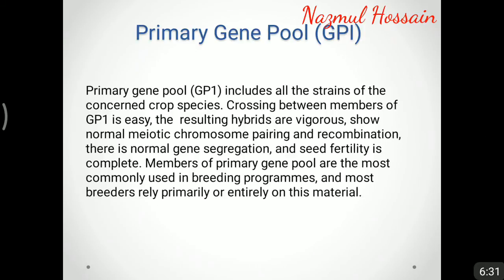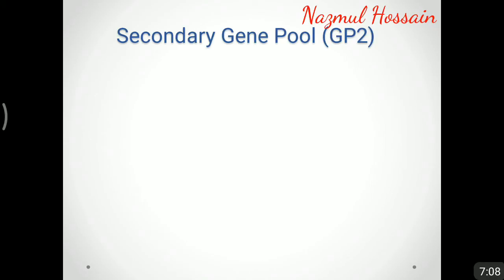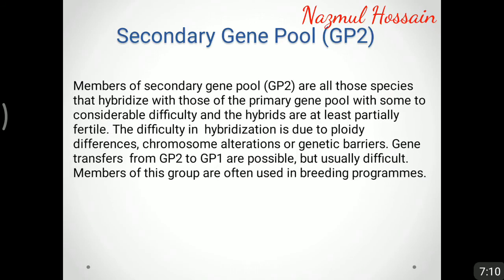The primary gene pool includes all the strains of the concerned crop species. Crossing between members of the primary gene pool is easy; the resulting hybrids are vigorous, show normal meiotic chromosome pairing and recombination, normal gene segregation, and seed fertility is complete. Members of the primary gene pool are the most commonly used in breeding programs, and most breeders rely primarily or entirely on this material.